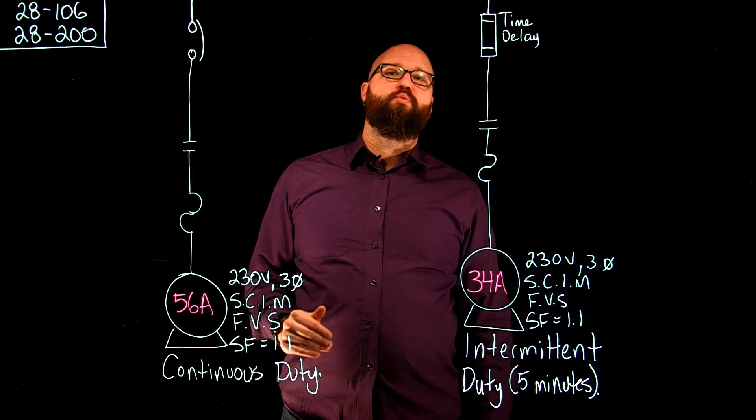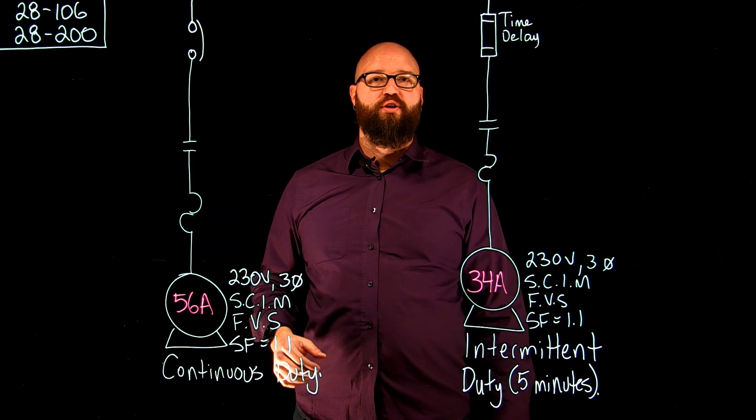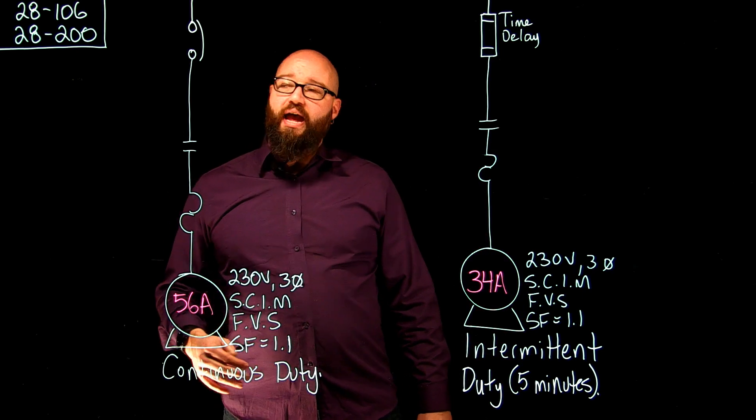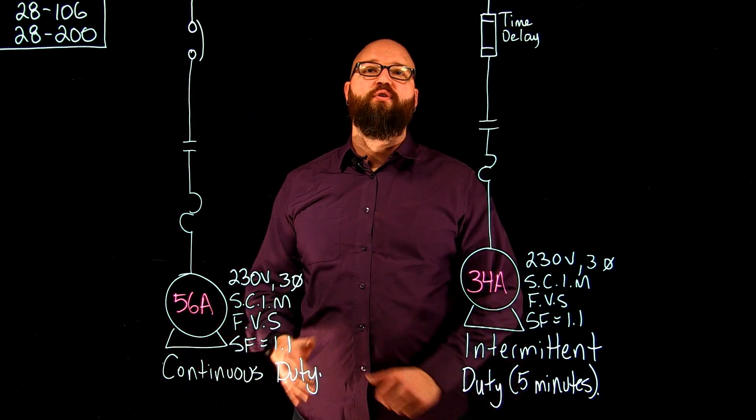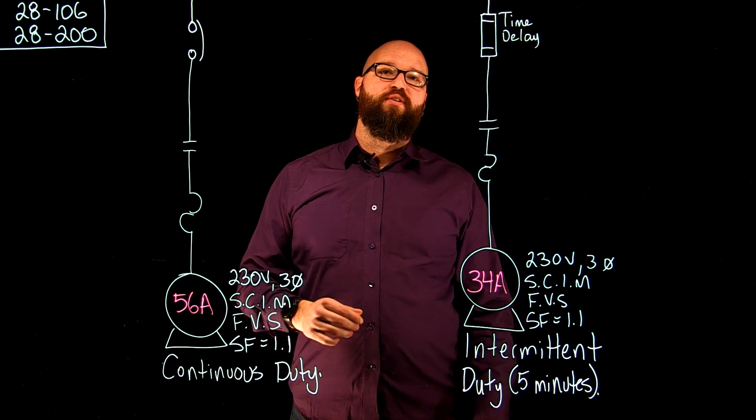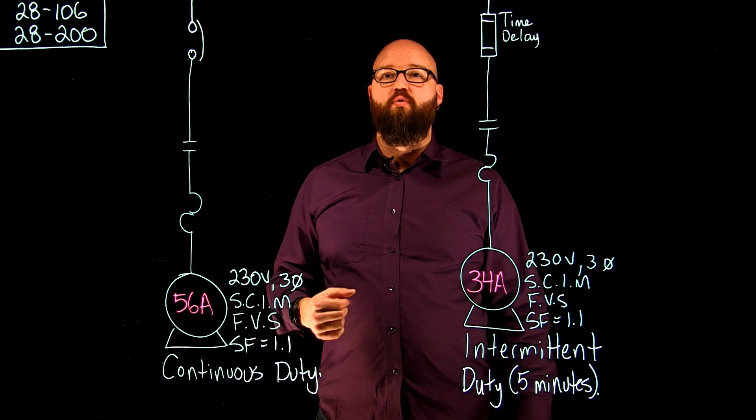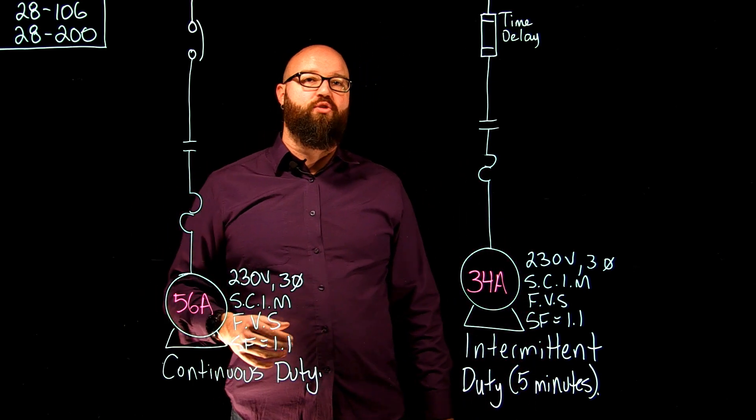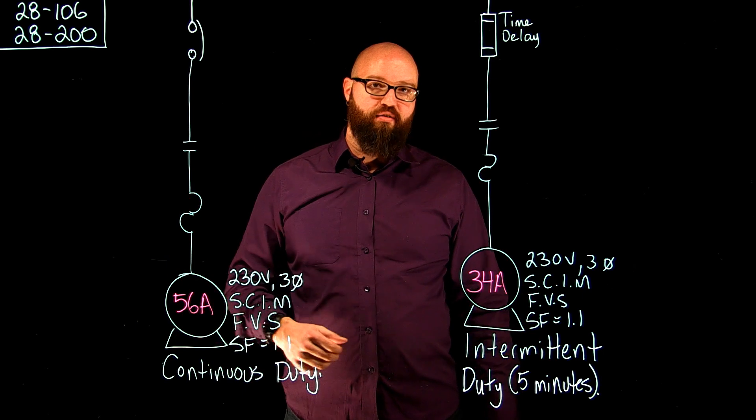The first one I want to take a look at is 28-106, where we're going to walk through how to calculate those actual branch circuit conductor sizes, and the second rule is 28-200, which is going to help us calculate our overcurrent protection for these individual motors. For our overload protection, there's another video where we walk through how to size those overloads based off the service factors, so we're not going to take care of that in this video.